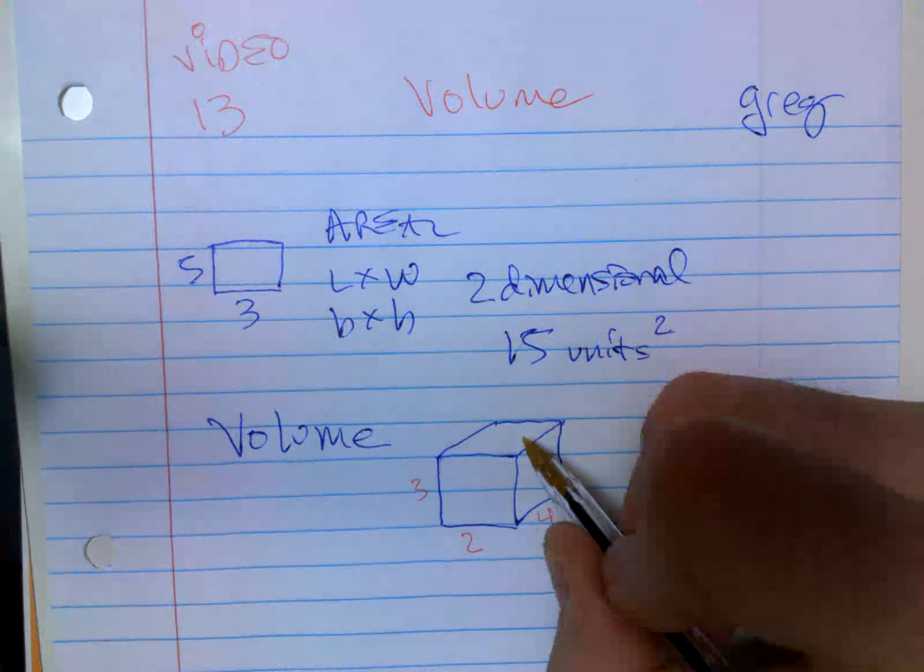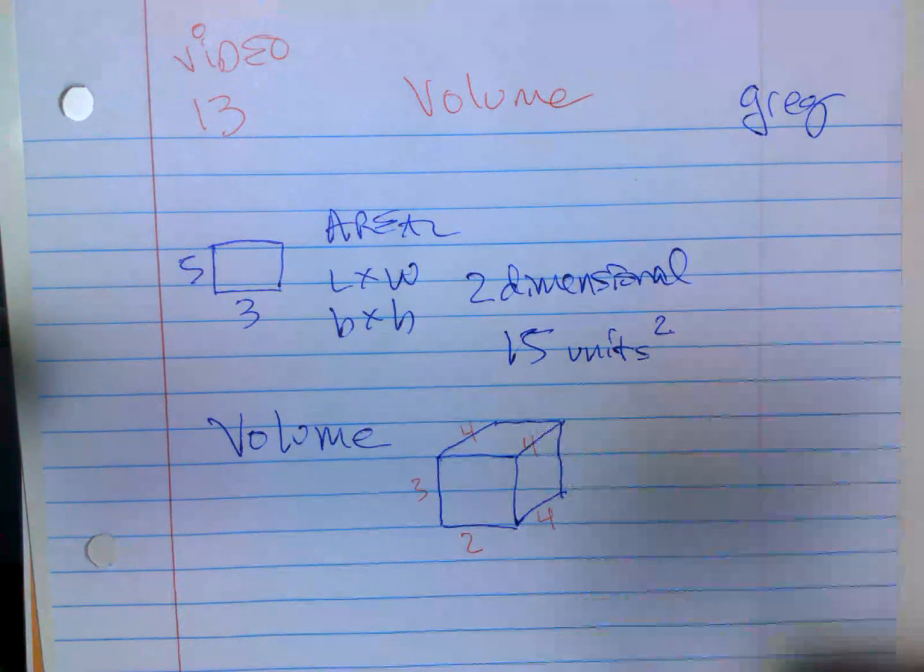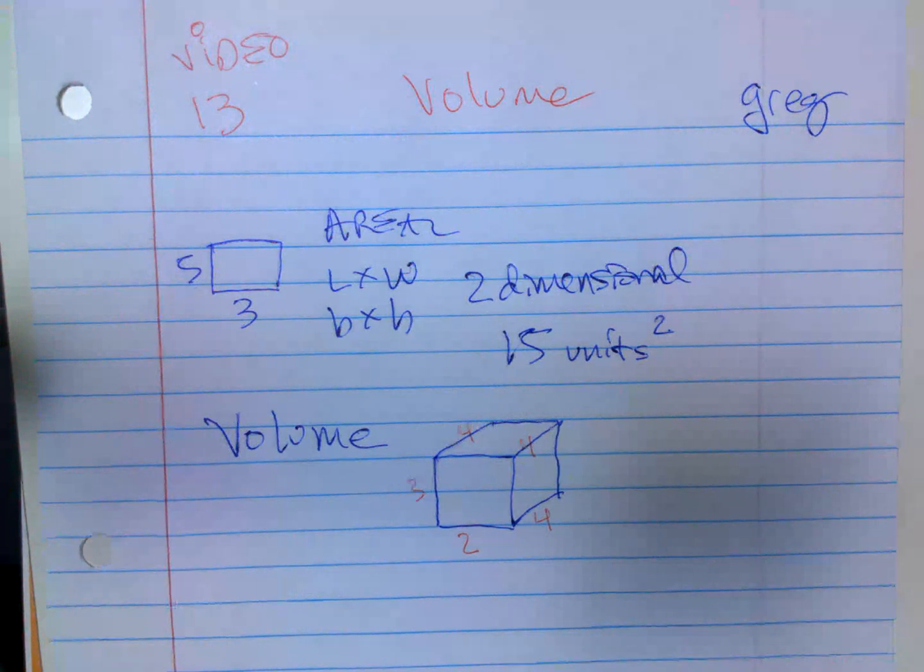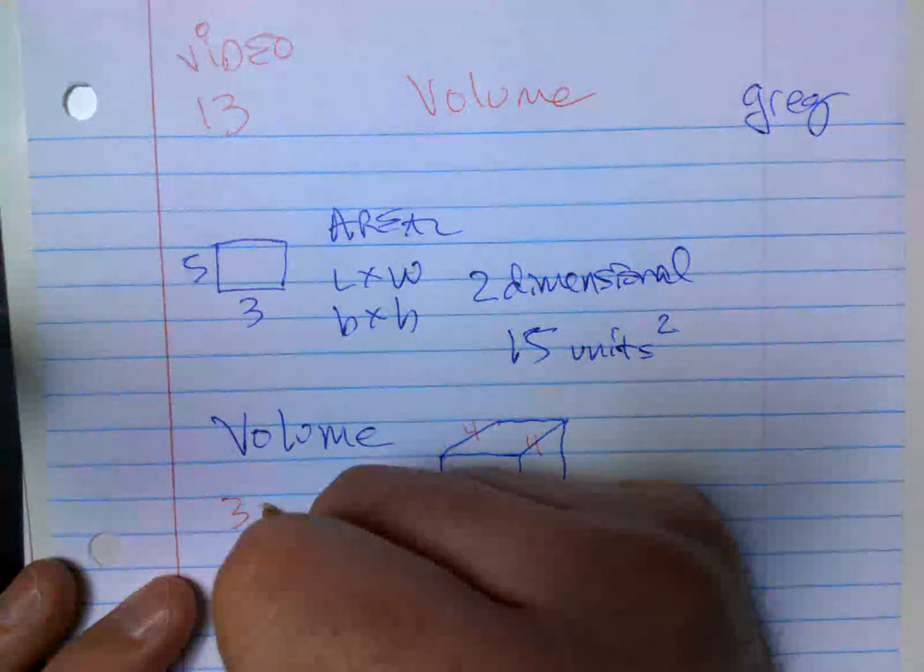Going that way. So that means this is four and this is four. Can you see that? Because that's going to talk about surface area. But right now we're just doing a three-dimensional shape. So it's three-dimensional.